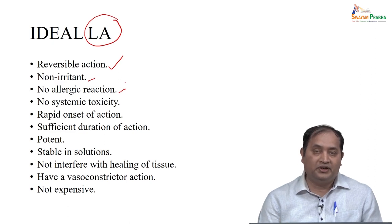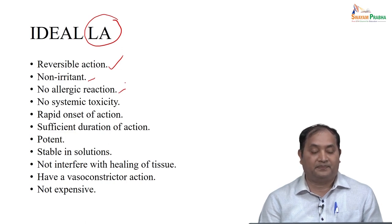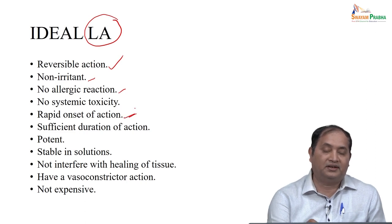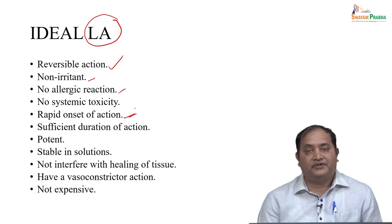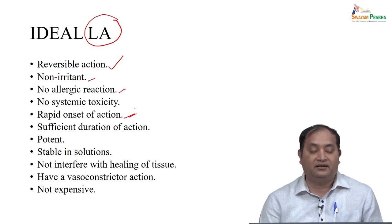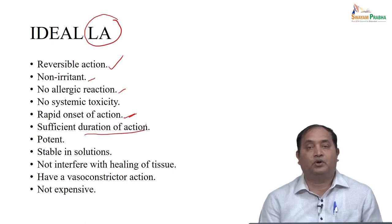That is the reason many times we use local anesthetic along with adrenaline, because we want to prevent further absorption in order to prevent systemic toxicity. Whenever you use local anesthetic, the onset should be short so that you get immediate action, and for a suitable time it should cover the local anesthetic effect. So there should be sufficient duration of action and it should be potent also.